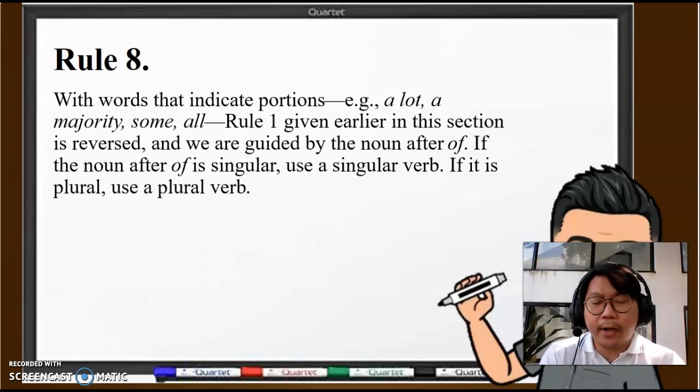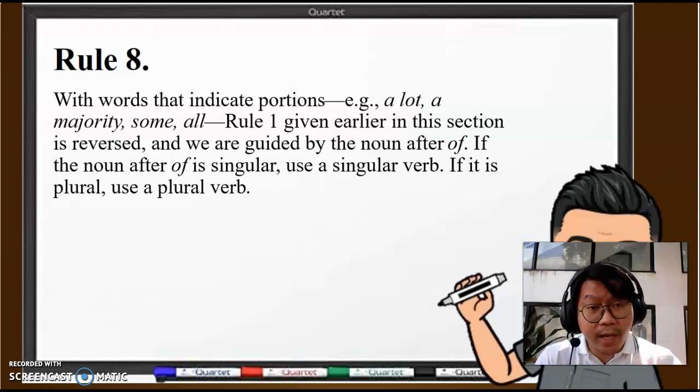Now we go to the next rule. This is something you have to keep in mind: Whenever the words indicate portions—"a lot," "a majority," "some," "all," including fractions like "one half," "one fourth," and percentages like "50 percent," "25 percent"—the first rule we discussed earlier is reversed. If the noun after "of" is singular, then we have to use a singular verb. If it's the other way around, if it's plural, then we have to use a plural verb.